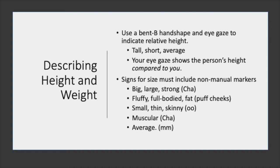Another important aspect of description is body size. Signs for size rely heavily on non-manual markers, so be sure to include them in your sign production. A cha mouth indicates big or strong. The ooh lips indicate thin. Mmm lips mean average. And the puff cheek means fat or fluffy.